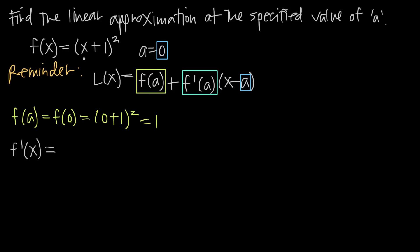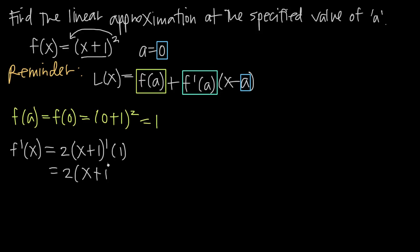Chain rule tells us that we leave the inside function alone — the inside function is x plus 1 — while we take the derivative of the outside function. We bring the 2 out in front, getting 2 times x plus 1, then subtract 1 from the exponent: 2 minus 1 is 1, so we get x plus 1 to the first power. Then we multiply by the derivative of the inside function. The derivative of x plus 1 is just 1, since the derivative of x is 1 and the derivative of 1 is 0. So we get 1, and the result is just 2 times x plus 1.